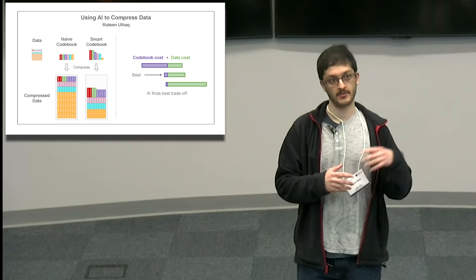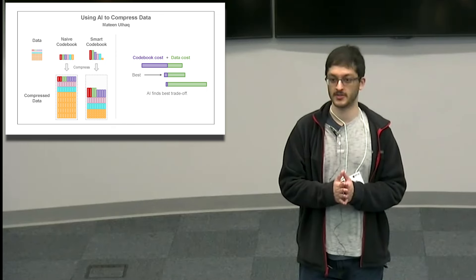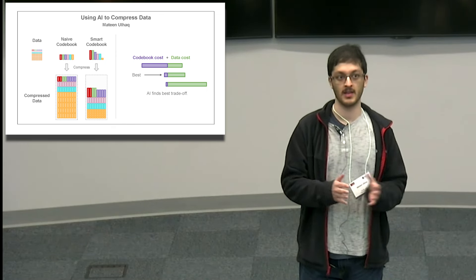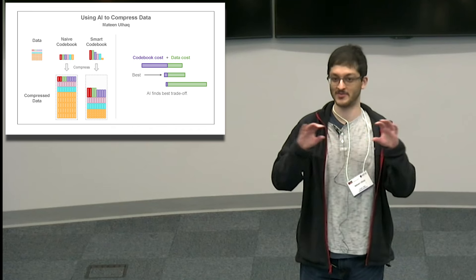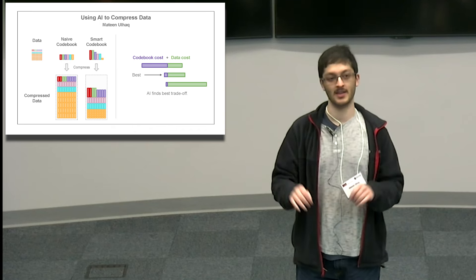Here we have a comparison of two different codebooks. The first is the naive codebook, which does not give us much compression because it just uses the same size block every time to represent the data.